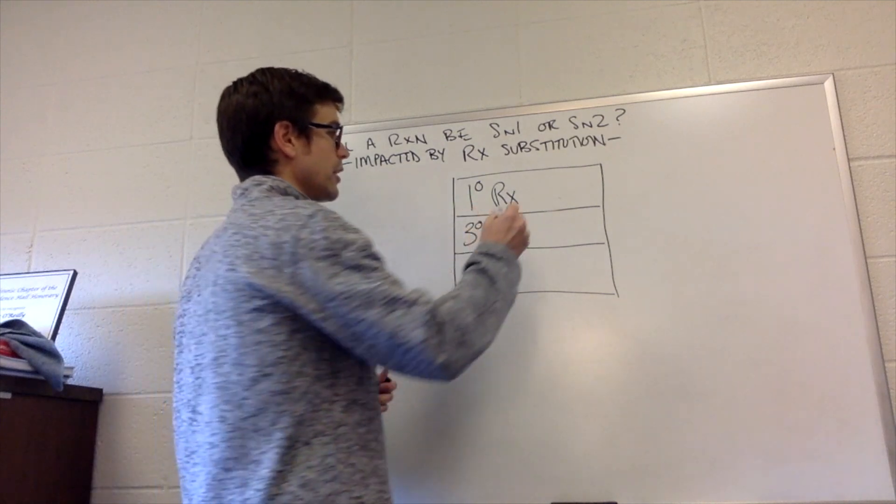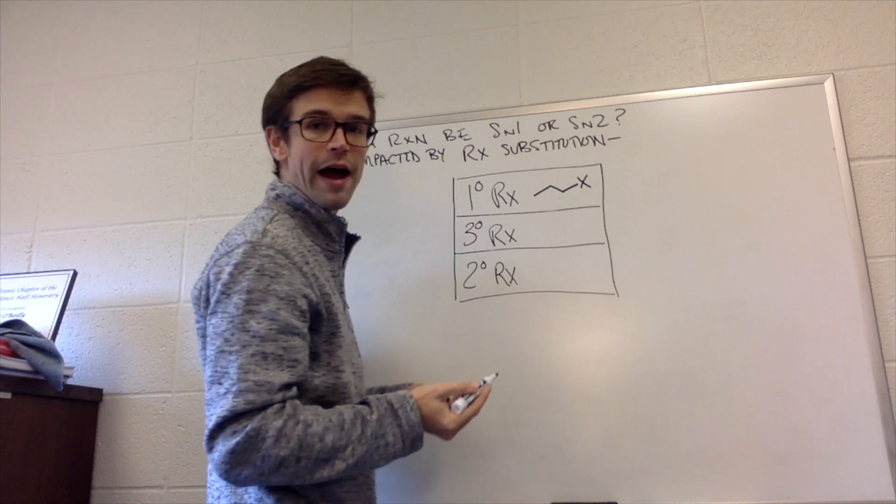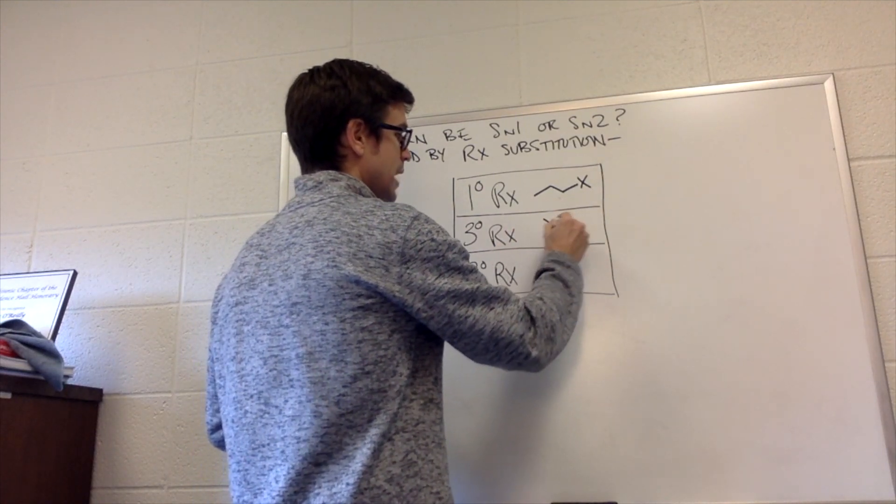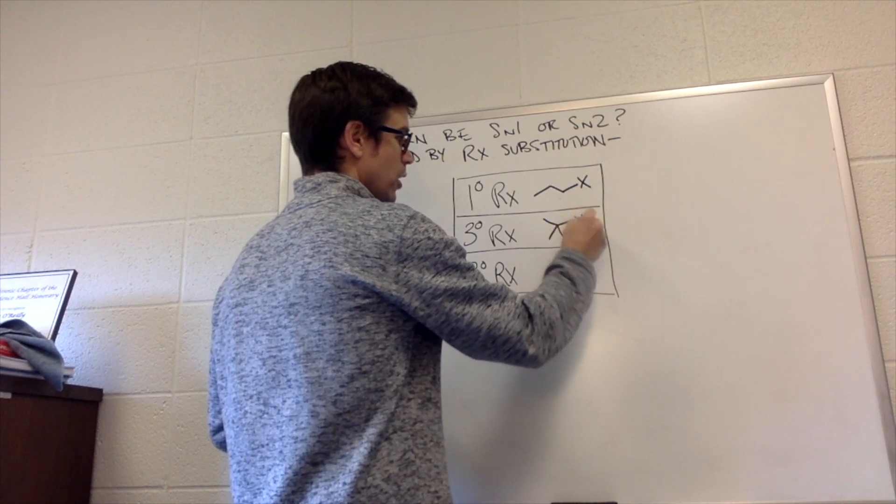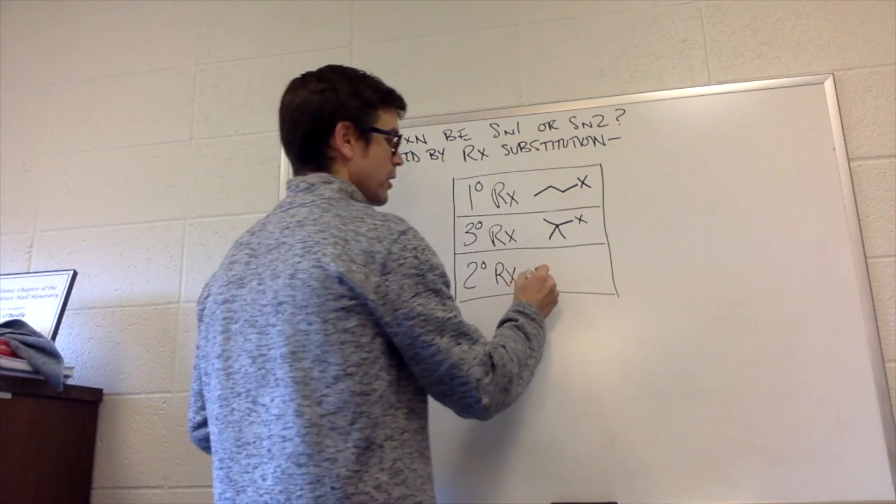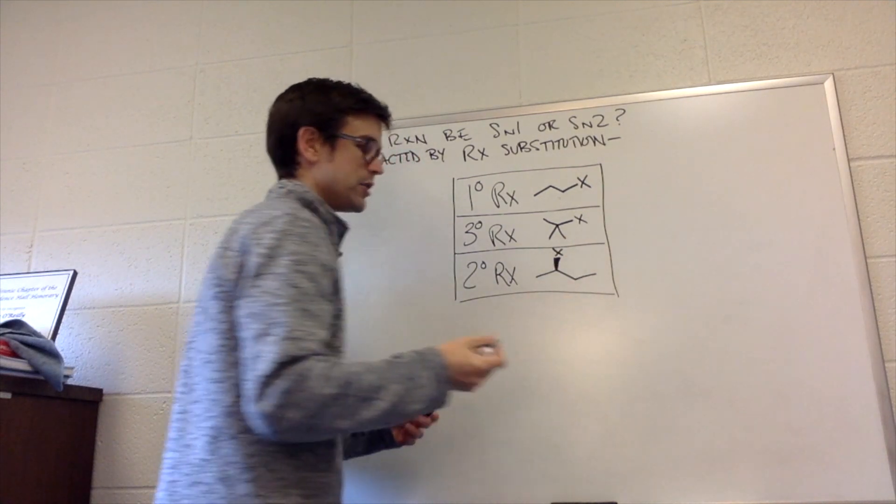We have primary alkyl halides, so that would be something like this. We'll do an X for the halogen. A tertiary alkyl halide means that it's a tertiary carbon connected to the halogen. And a secondary alkyl halide has that secondary position, which is attached to the halogen.